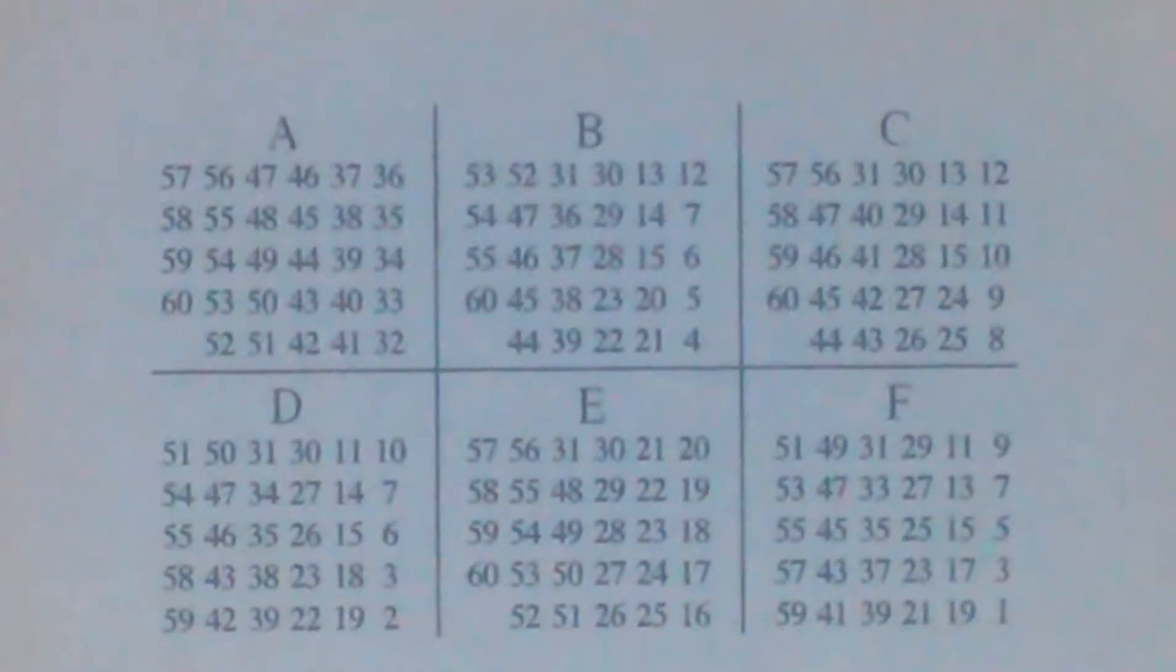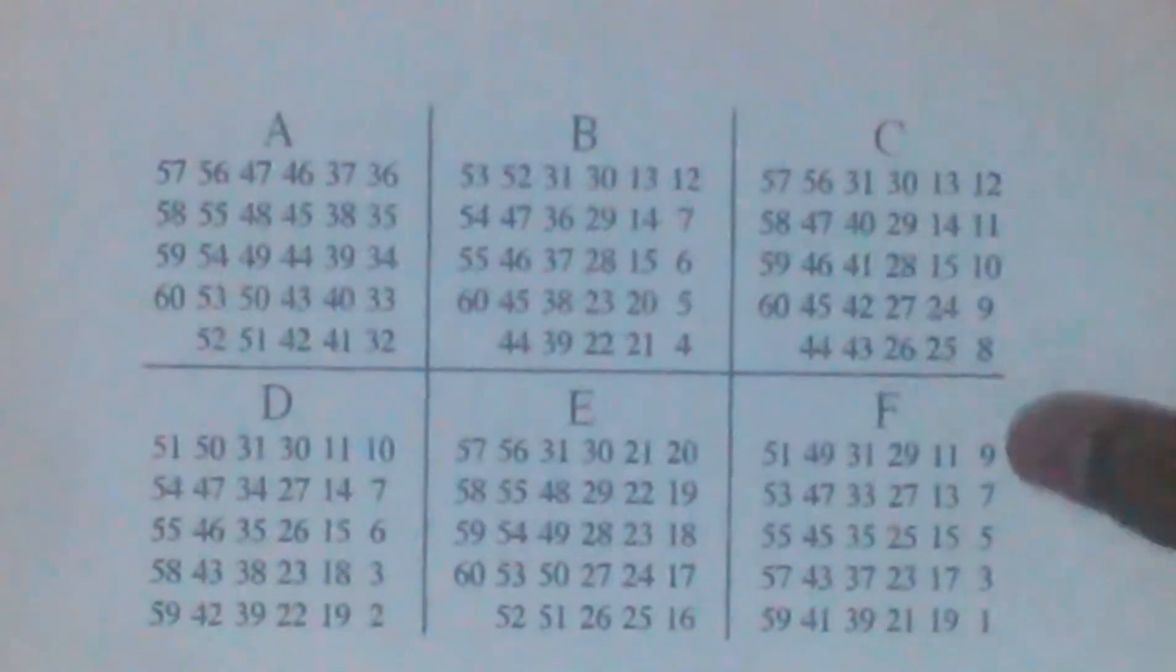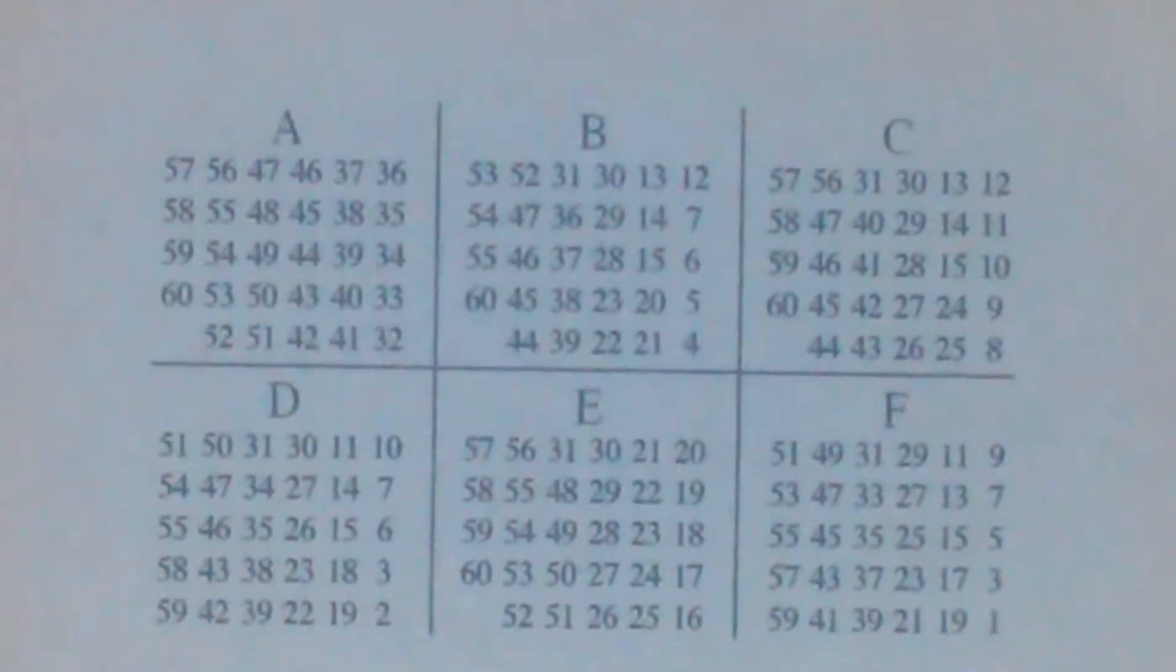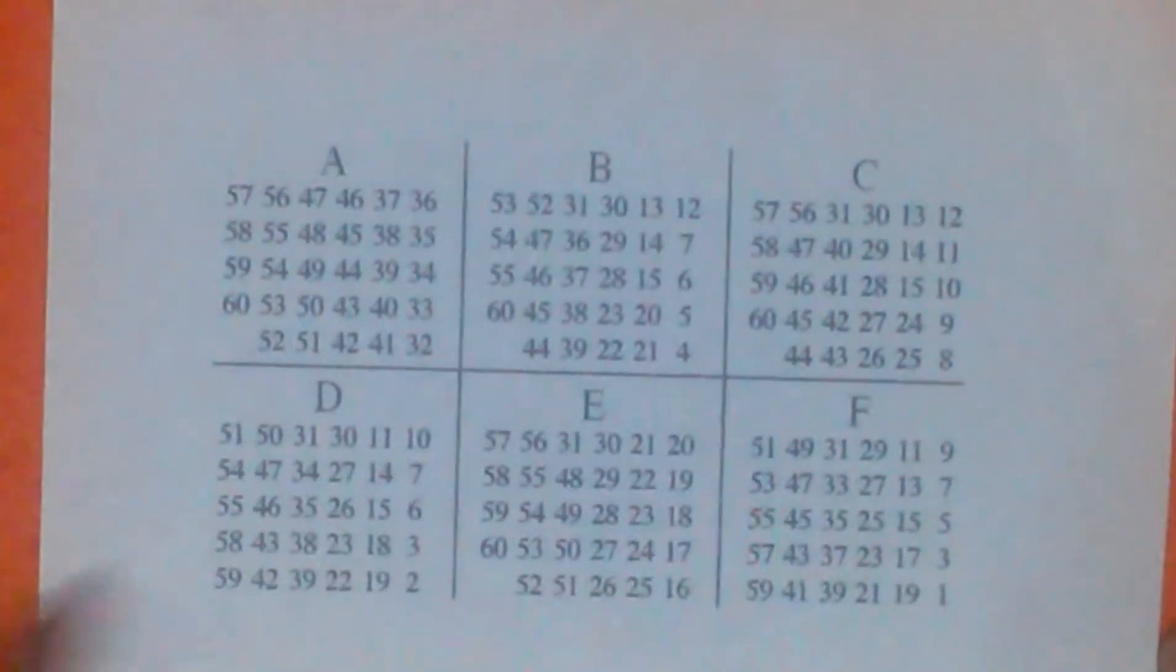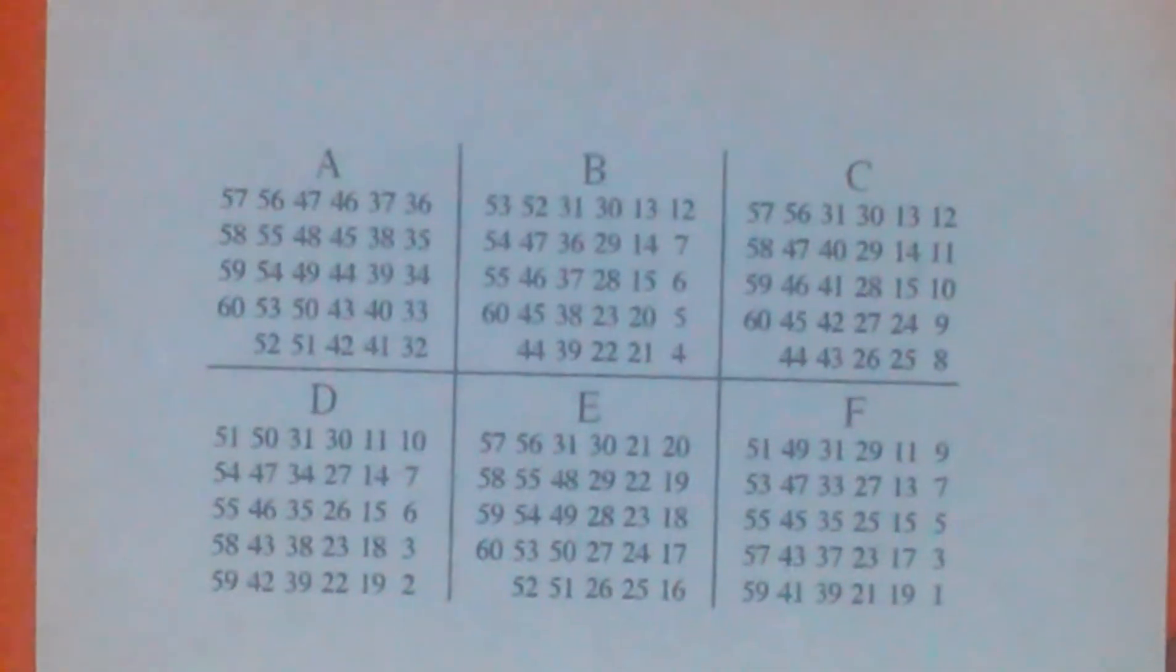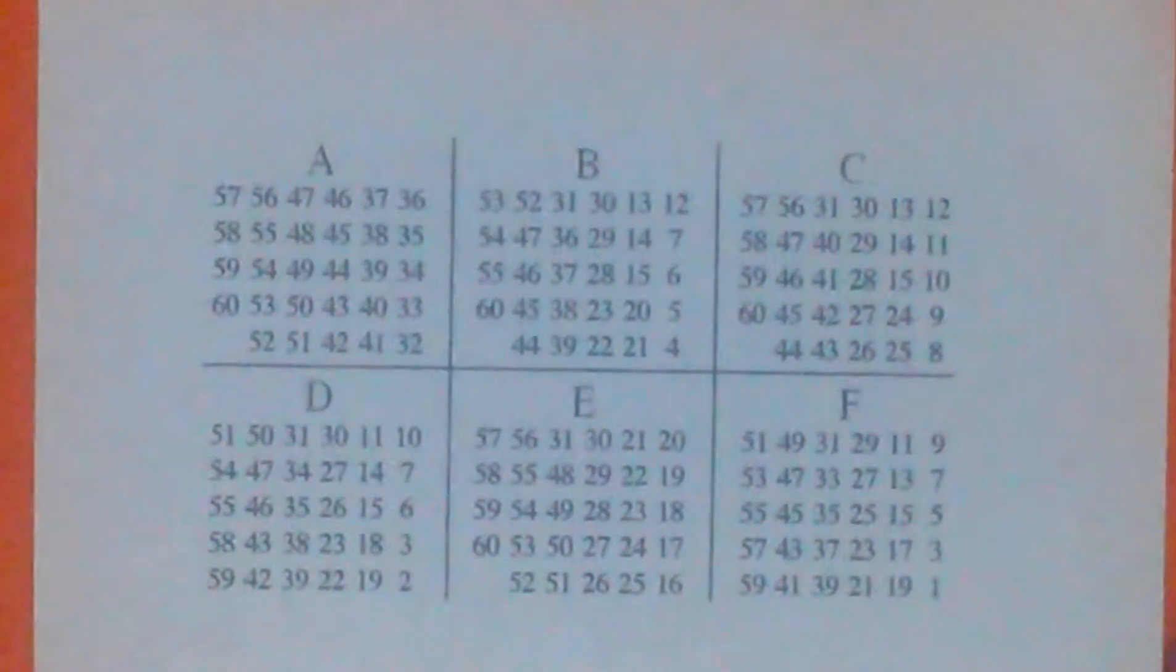As you can see, this is a chart that shows numbers and columns. So basically, this is all that is here. What you're going to do is have a spectator select a number from any of the columns and have them tell you what column their number is in.